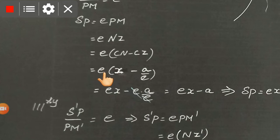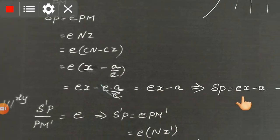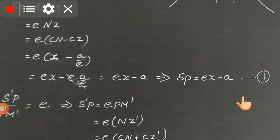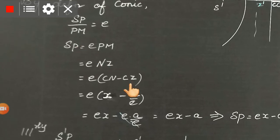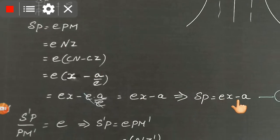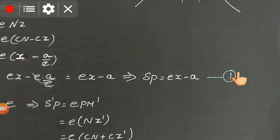Bring e inside the brackets: e times x minus e times (a/e). Cancel e and e, so we get ex minus a. Therefore SP equals ex minus a. Name this as Equation 1.